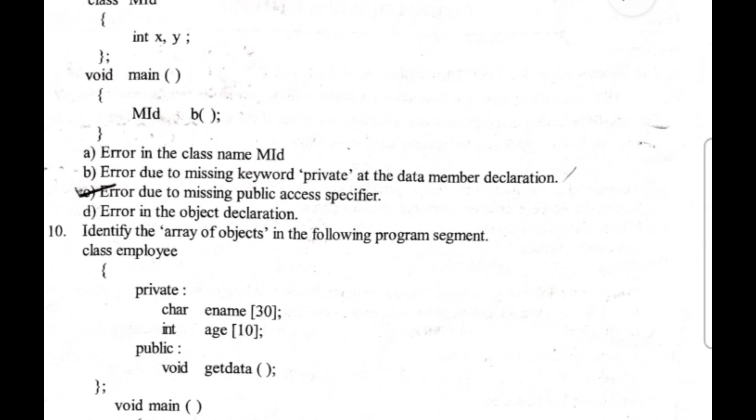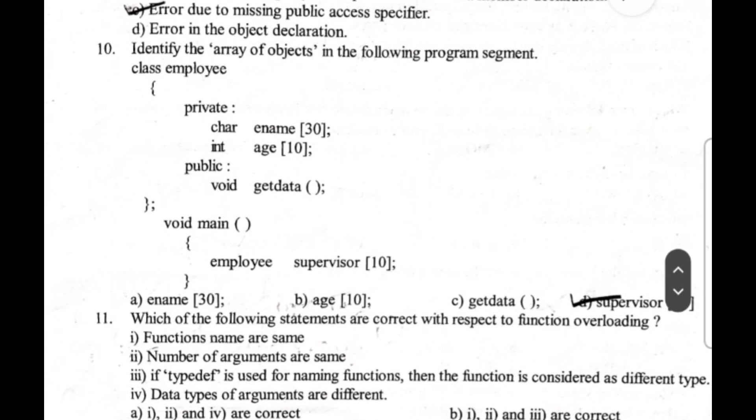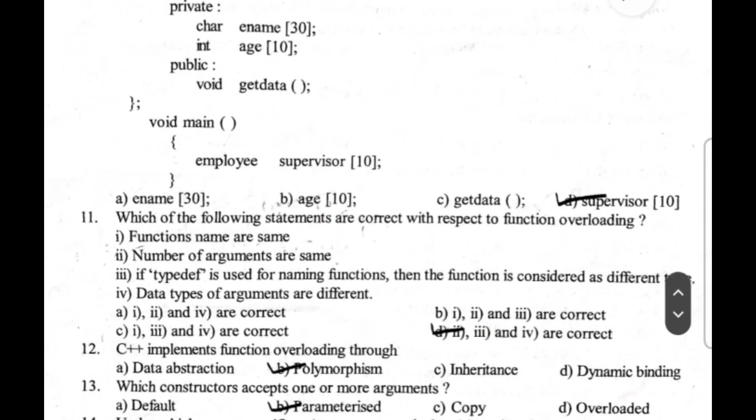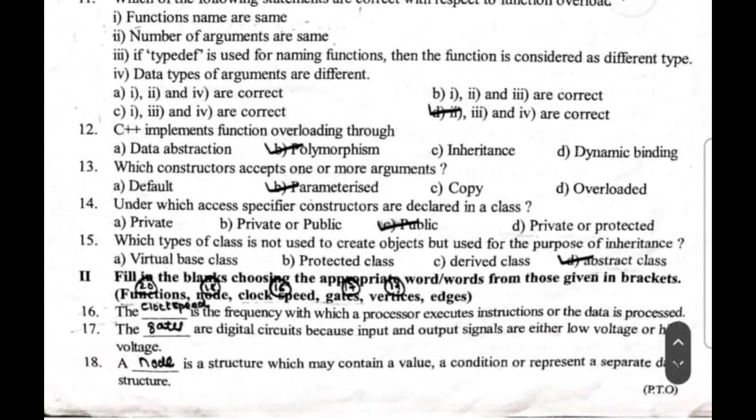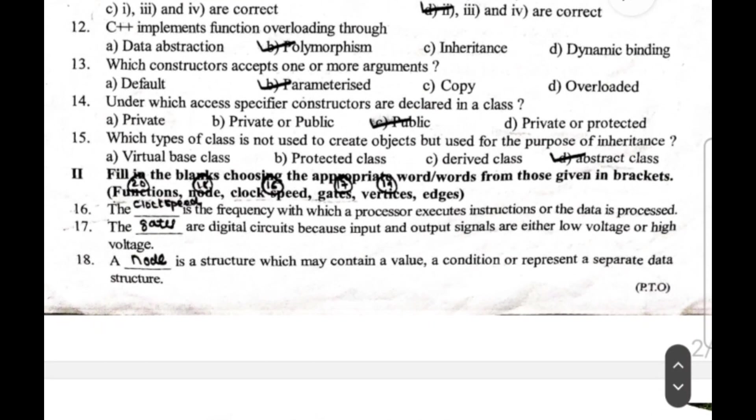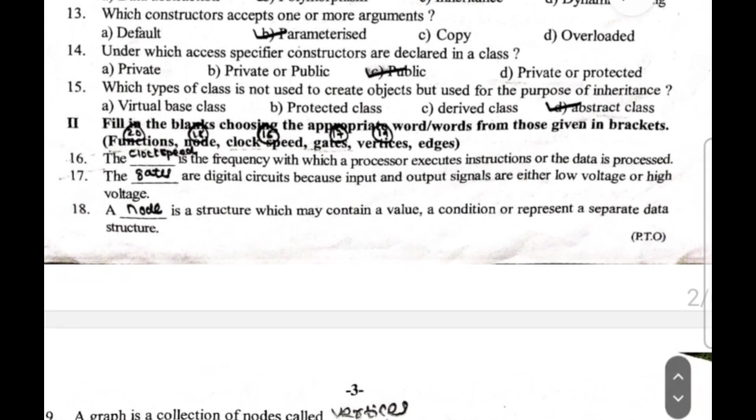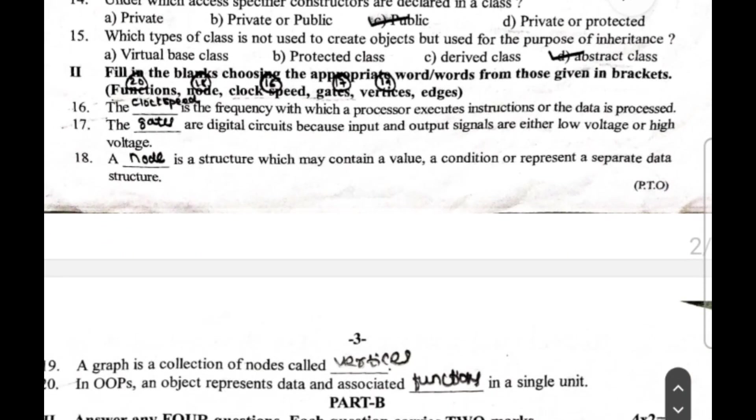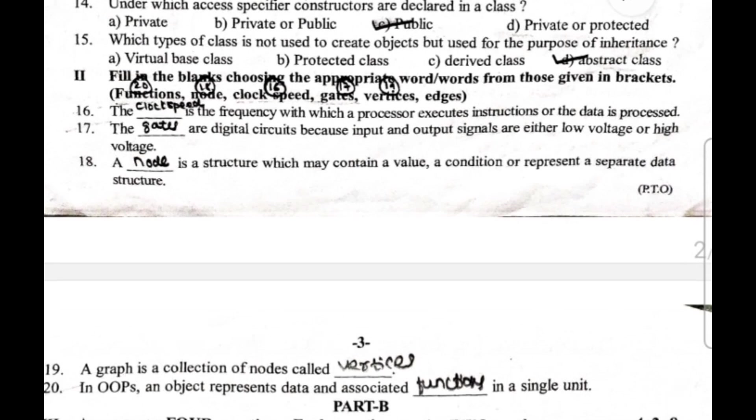11th question: the answer is option D, sub question second, sub question third and fourth are correct. 12th question: C++ implements function overloading through polymorphism - option B is your correct answer. 13th question answer is option B, parameterized. 14th question answer is option C, public. 15th question answer is abstract class.